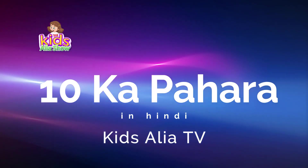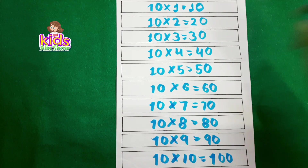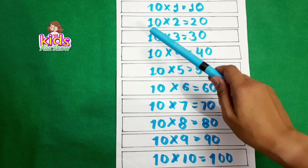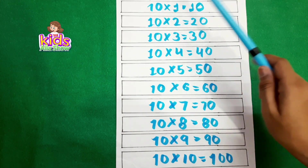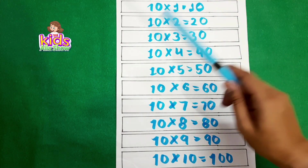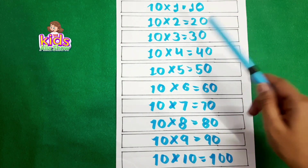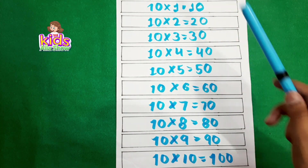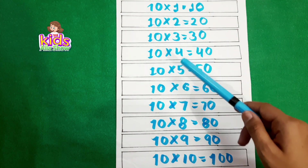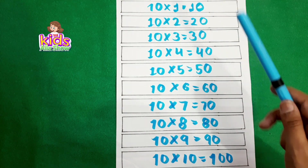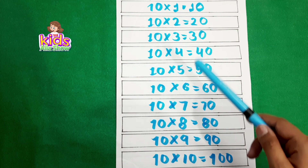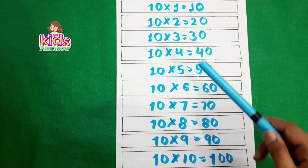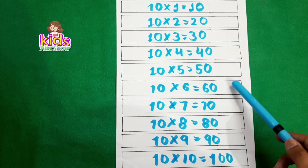Now we will do ten. Ten one is ten. Ten two is twenty. Ten three is thirty. Ten four is forty. Ten five is fifty. Ten six is sixty. Ten seven is seventy.